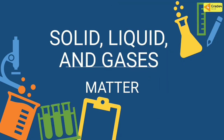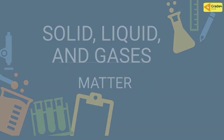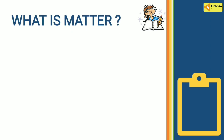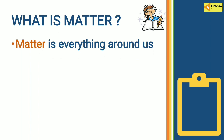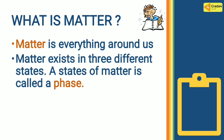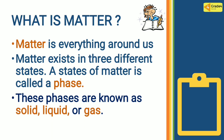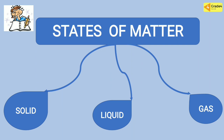Welcome back to science lesson. Our topic today is about matter — solid, liquid, and gas. What is matter? Matter is everything around us. Matter exists in three different states. A state of matter is called a phase. The phases are known as solid, liquid, or gas.